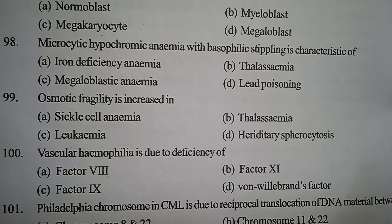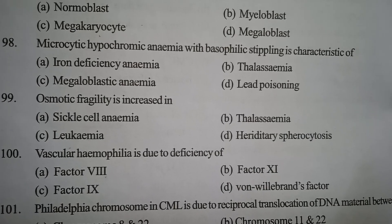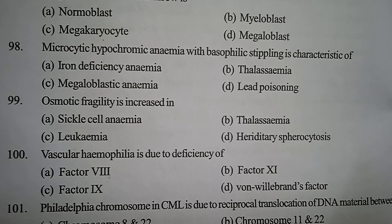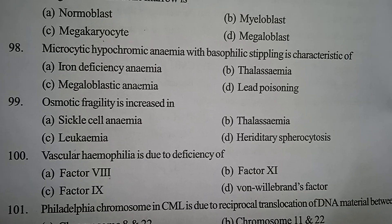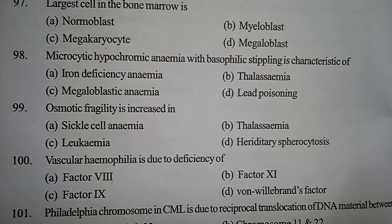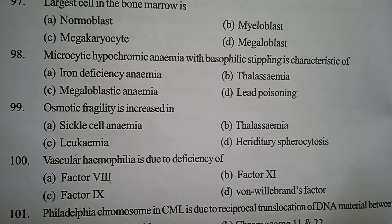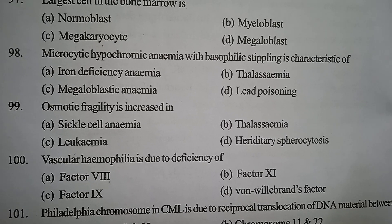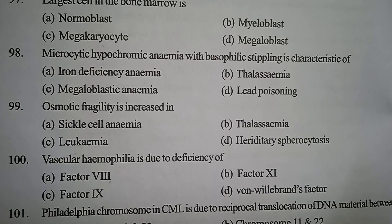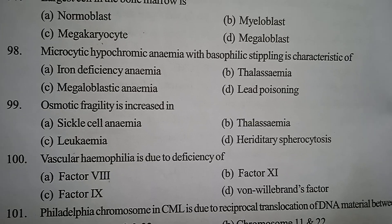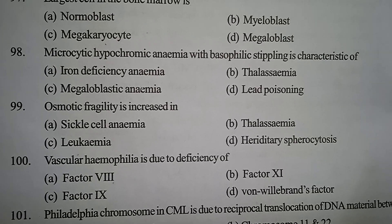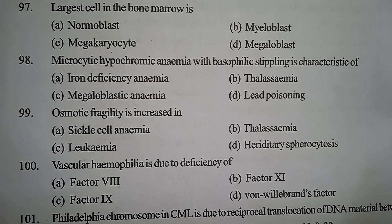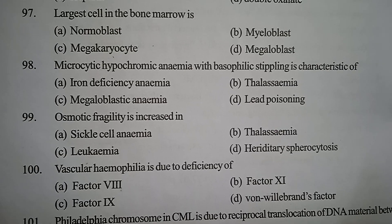Next one: osmotic fragility is increased in — Option A: sickle cell anemia. Option B: thalassemia. Option C: leukemia. Option D: hereditary spherocytosis. Correct answer: Option D, hereditary spherocytosis.